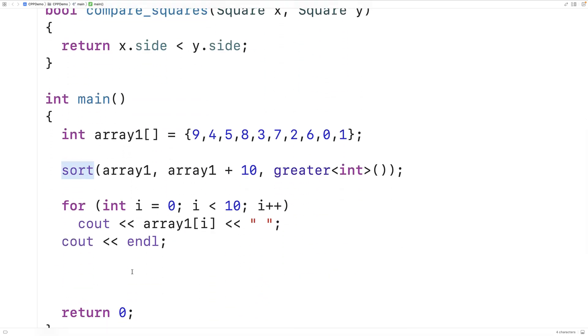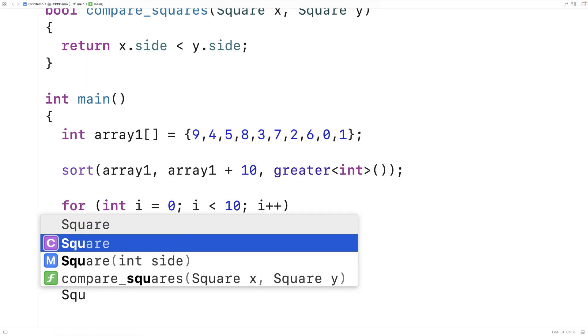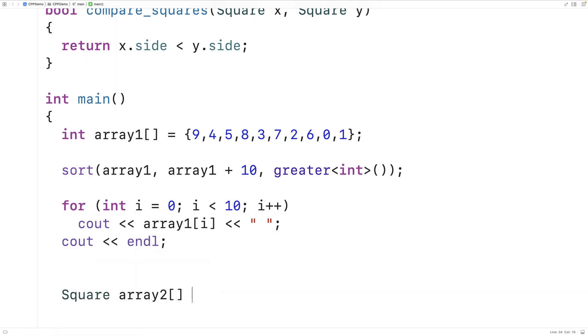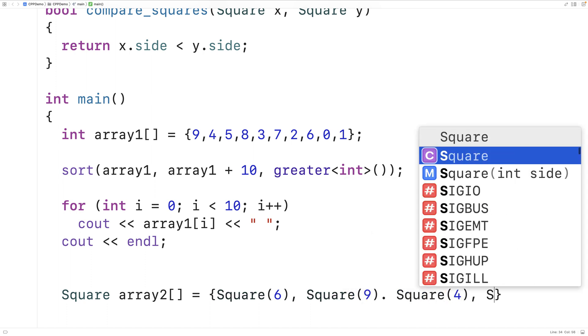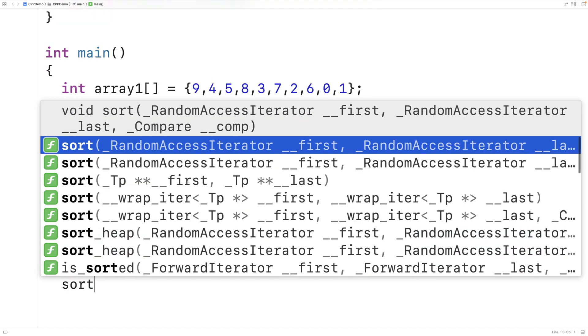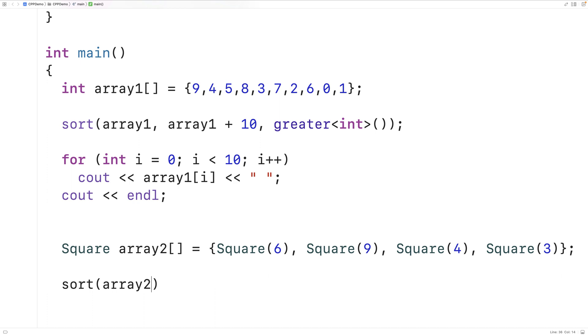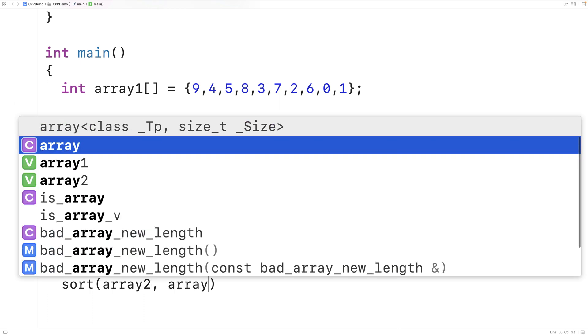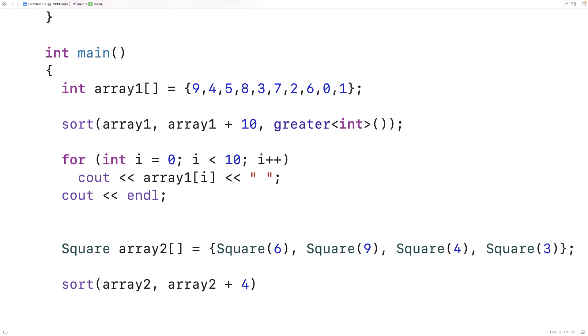Let's go over an example of sorting an array of squares now. We'll say square array2 is equal to square 6, square 9, square 4, and square 3. So we now have four square objects in this array. So we'll call sort and we'll give it array2 as the first argument. Array2 plus 4 as the second argument because we have four squares in our array. And then we'll give it compare_squares as the third argument.